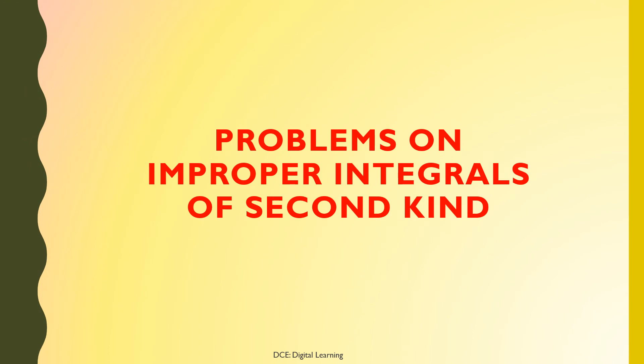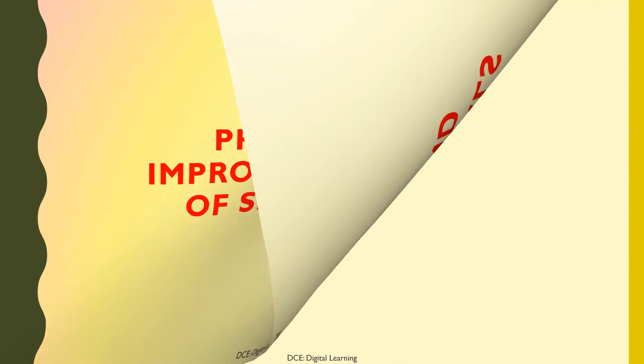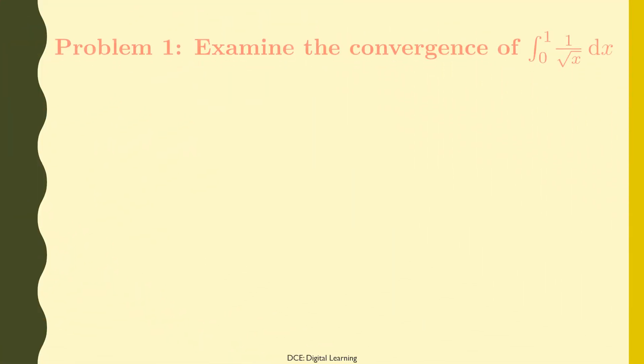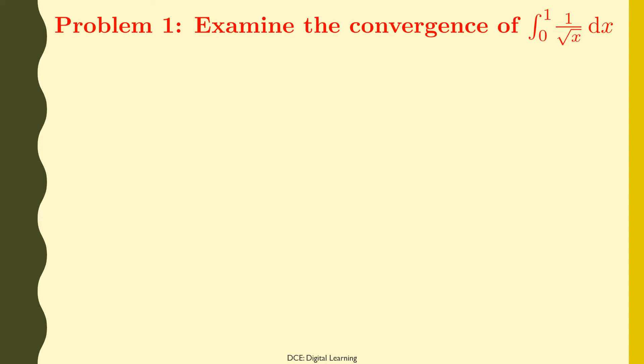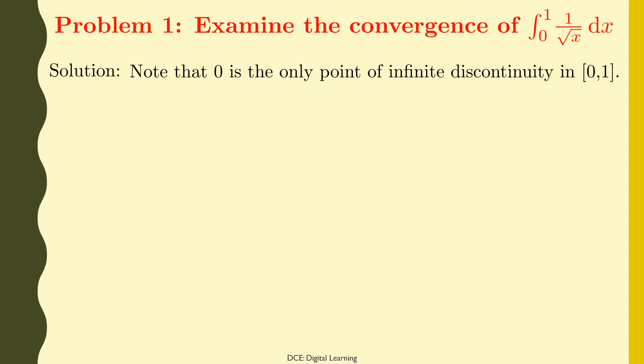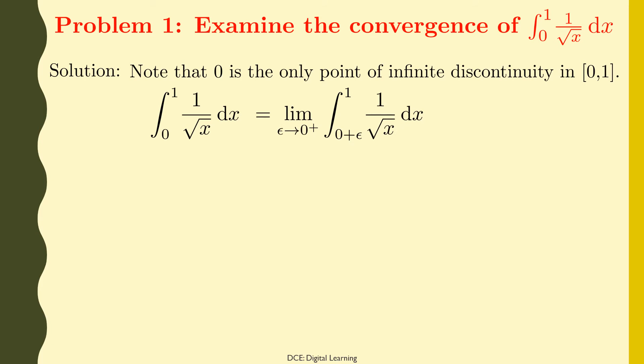Now, problems on improper integrals of the second kind. Problem 1. Examine the convergence of the integral of 1/√x dx from 0 to 1. Solution. Note that 0 is the only point of infinite discontinuity in the domain of integration, the closed interval [0, 1]. Therefore, the given integral of 1/√x dx from 0 to 1 equals the limit of the integral of 1/√x dx from 0 + ε to 1 as ε tends to 0 from the right.